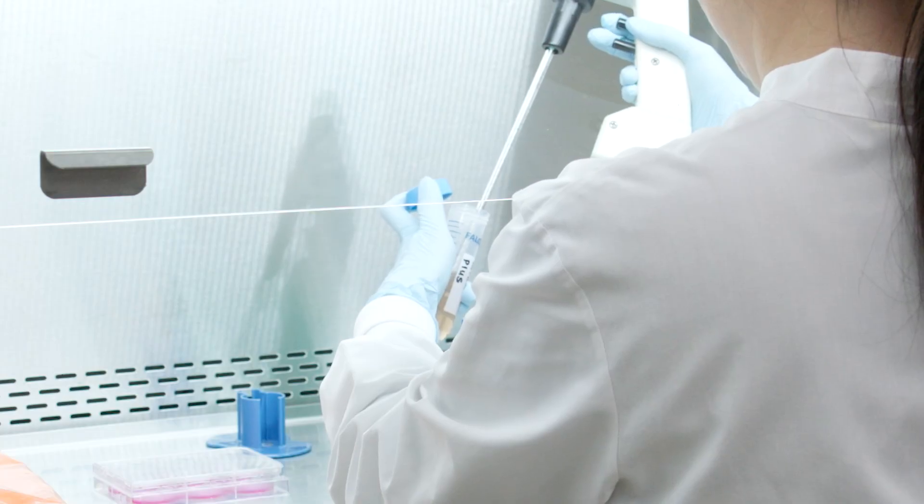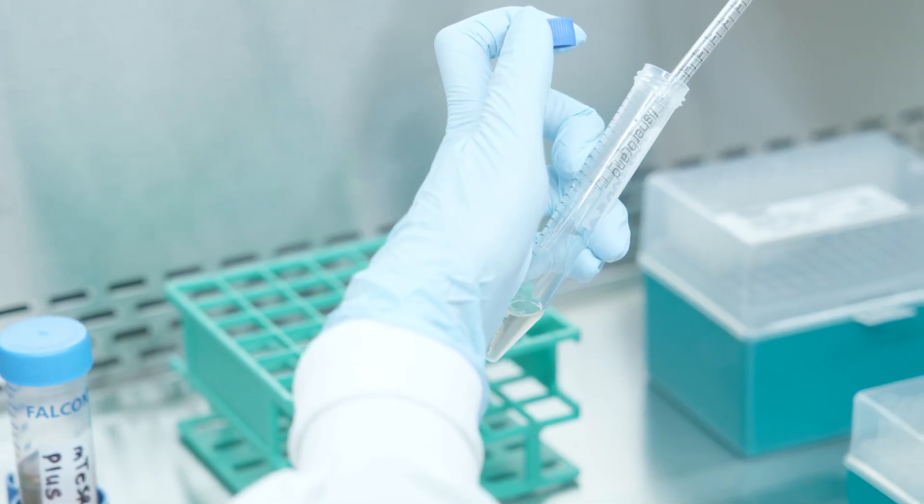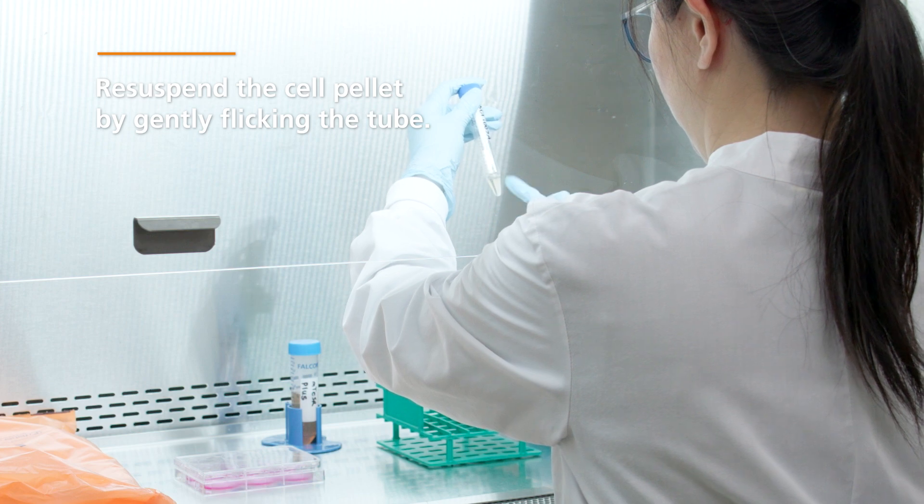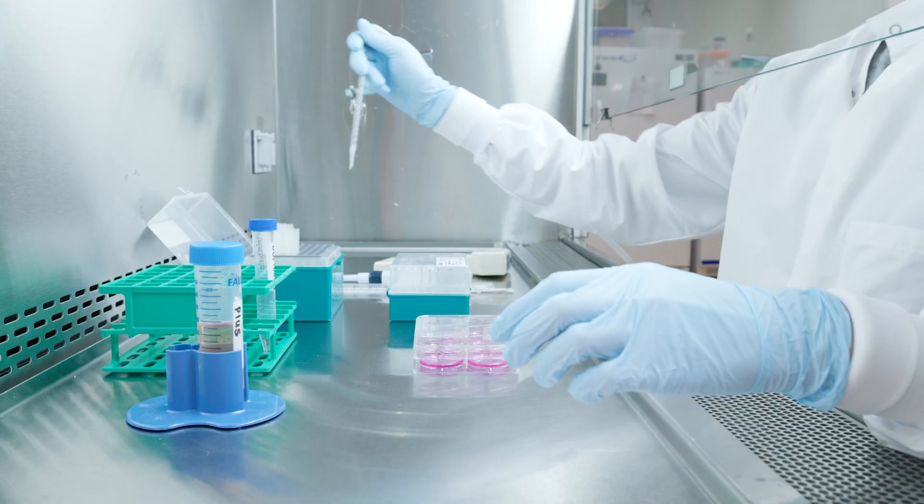Add 1-milliliter of M-Teaser Plus to the cell pellet, then resuspend the cell pellet by gently flicking the tube. Avoid pipetting up and down. Ensure the cells remain as aggregates for optimal attachment and recovery.